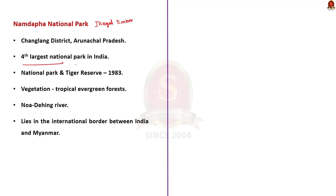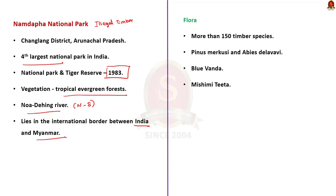Our next question is about a protected area in Arunachal Pradesh. The correct answer is option B — Namdapha National Park. The park came in news because of illegal timber depots. Namdapha National Park lies in the Changlang district of Arunachal Pradesh and is the fourth largest national park in India. It was established as a national park in 1983 and declared a tiger reserve the same year. The vegetation is characterized by tropical evergreen forest. The Noa-Dihing river, a tributary of the Brahmaputra, flows in a north-south direction through the middle of the park. It lies on the international border between India and Myanmar.